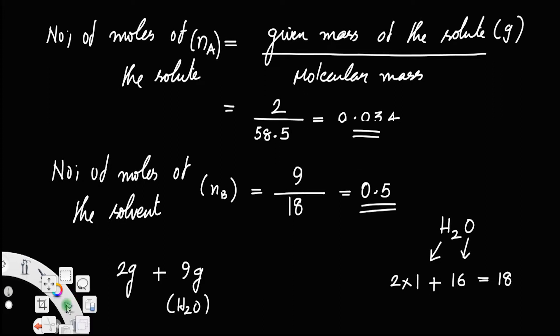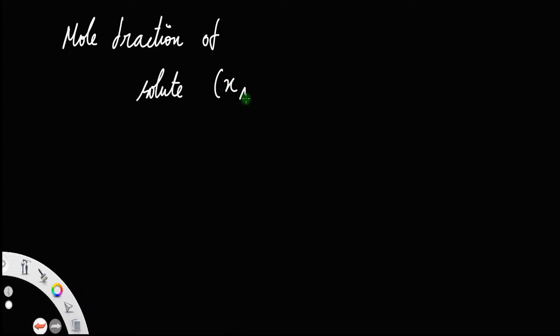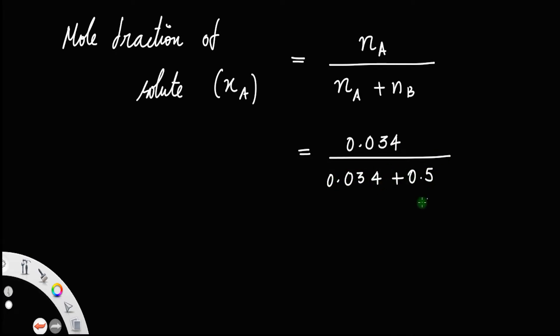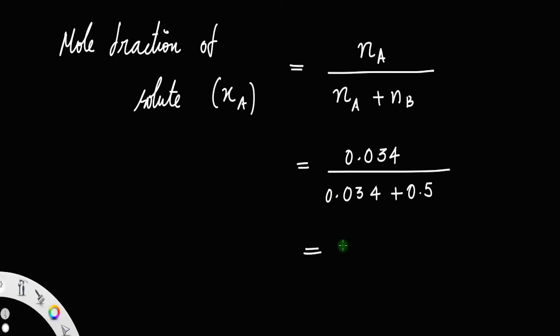Now you can find the mole fraction. The formula for mole fraction: mole fraction of solute XA will be number of moles of the solute NA divided by the total number of moles of the solution, that is NA plus NB. You already found out NA which is 0.034, so 0.034 divided by 0.034 plus 0.5. The answer for this is approximately 0.064. So that is the mole fraction of the solute.